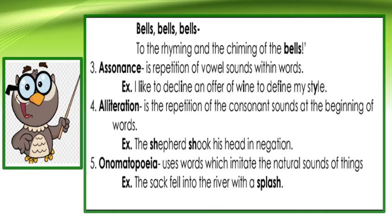Next, we also have alliteration. This is the repetition of consonant sounds at the beginning of words. Example: the shepherd shook his head in negation. And the last sound device is onomatopoeia. This uses words which imitate the natural sounds of things. Example: the sack fell into the river with a splash.